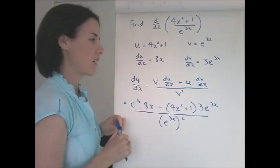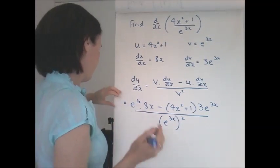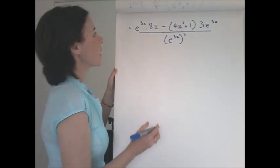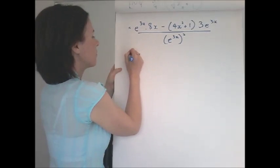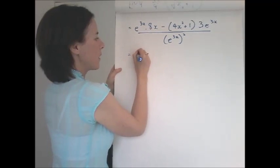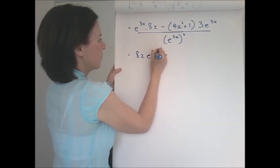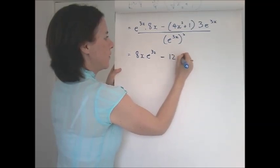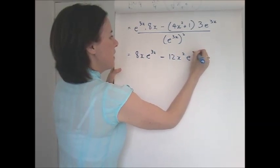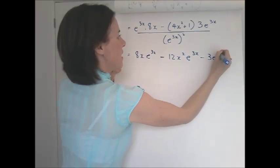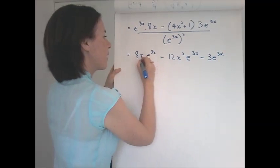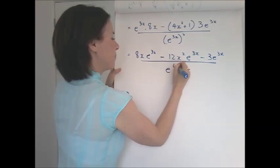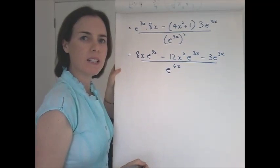Okay, might go over the page so I can fit it in. So this is the last line we got to on the previous page and I want to simplify it. This term would look better with the 8x in front. Going to expand this out, I have minus 12x squared e to the 3x and I have minus 3e to the 3x. And on the bottom, powers across a bracket we multiply, so that will be e to the 6x.